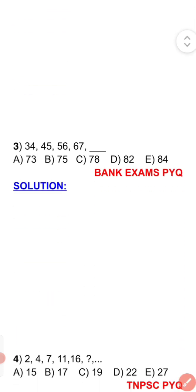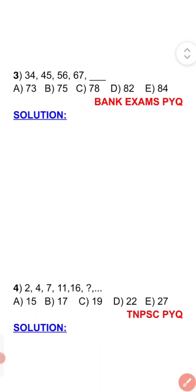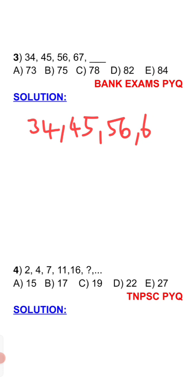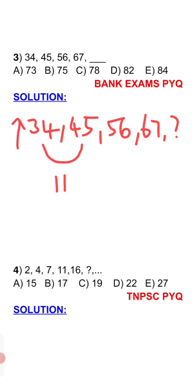So next, the third one — listen to the third question. The series is: 34, 45, 56, 67. Find the next term. First, you will find out what pattern is used. The increase is addition. So first, 45 minus 34 is 11 — so plus 11.